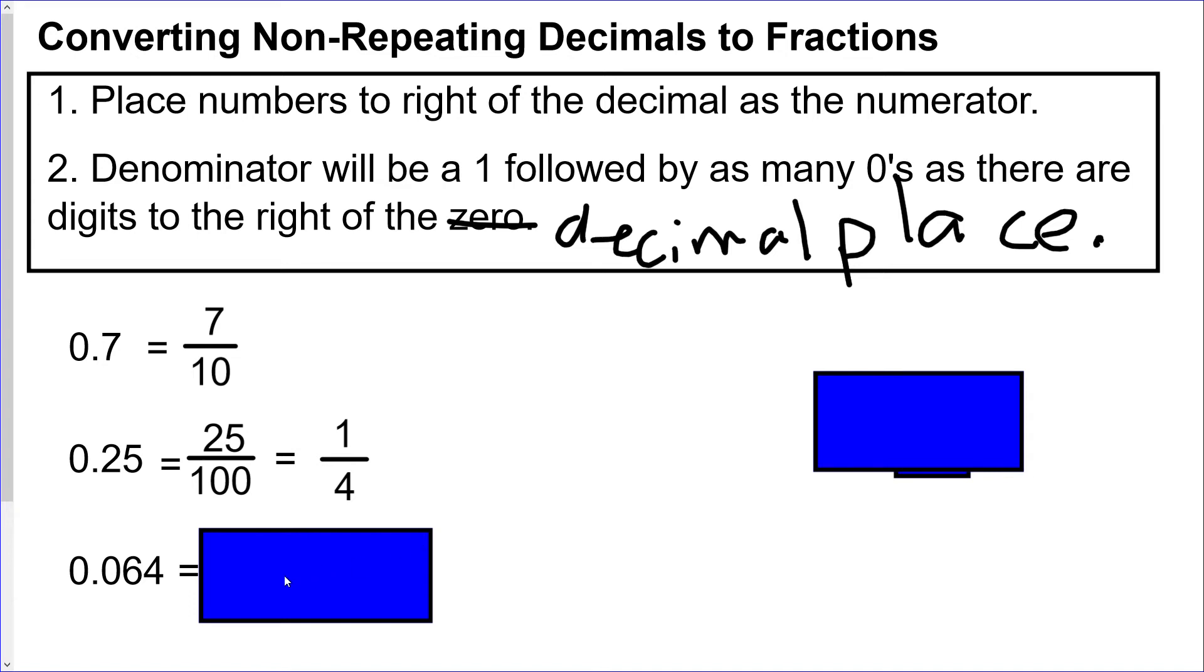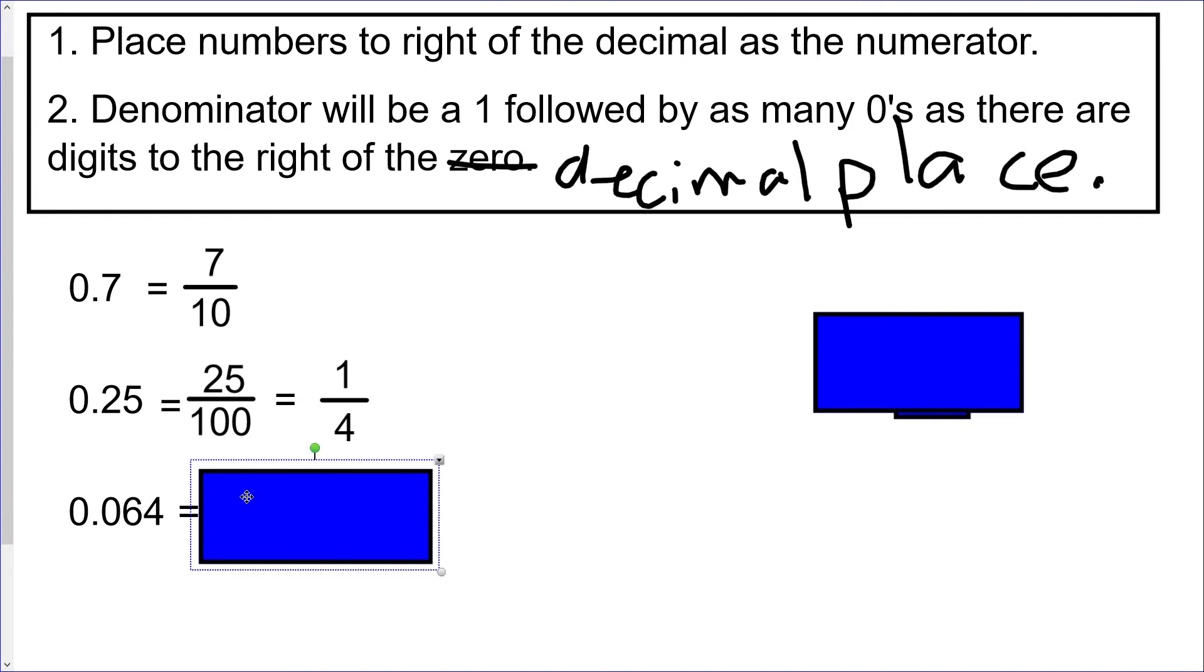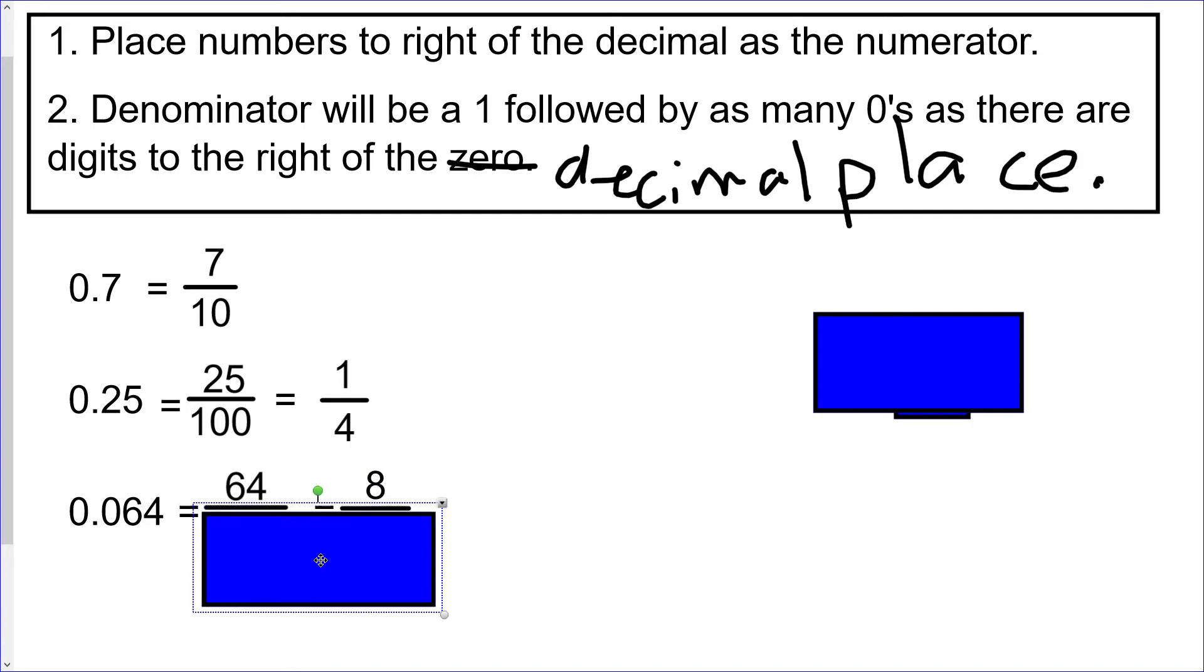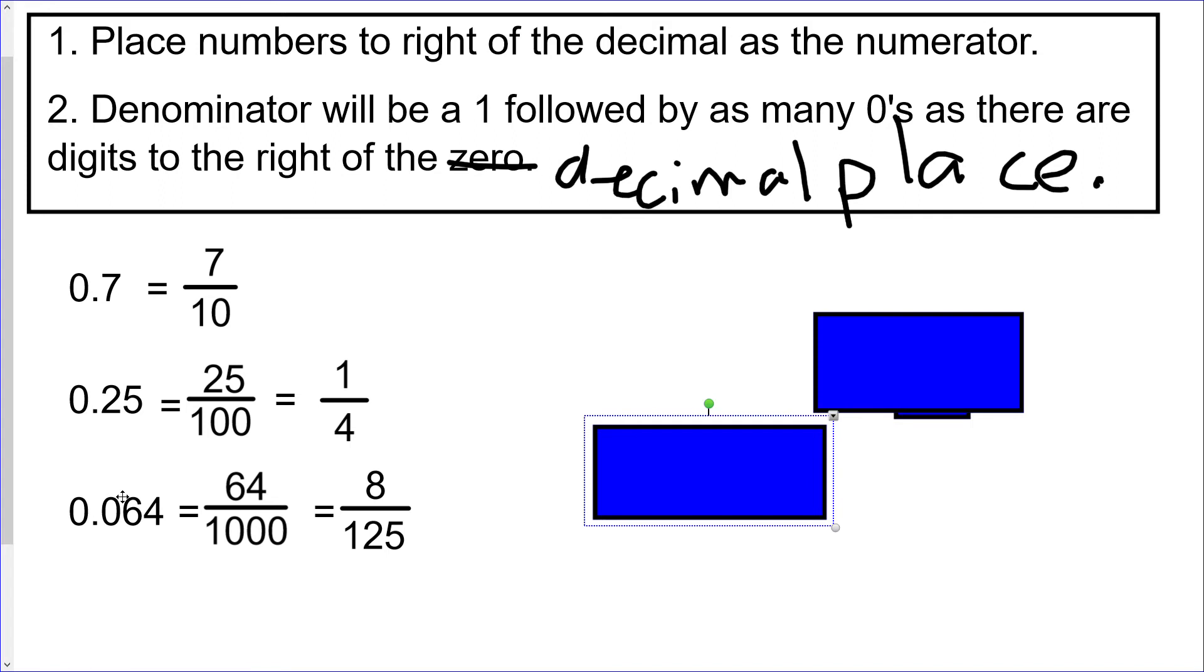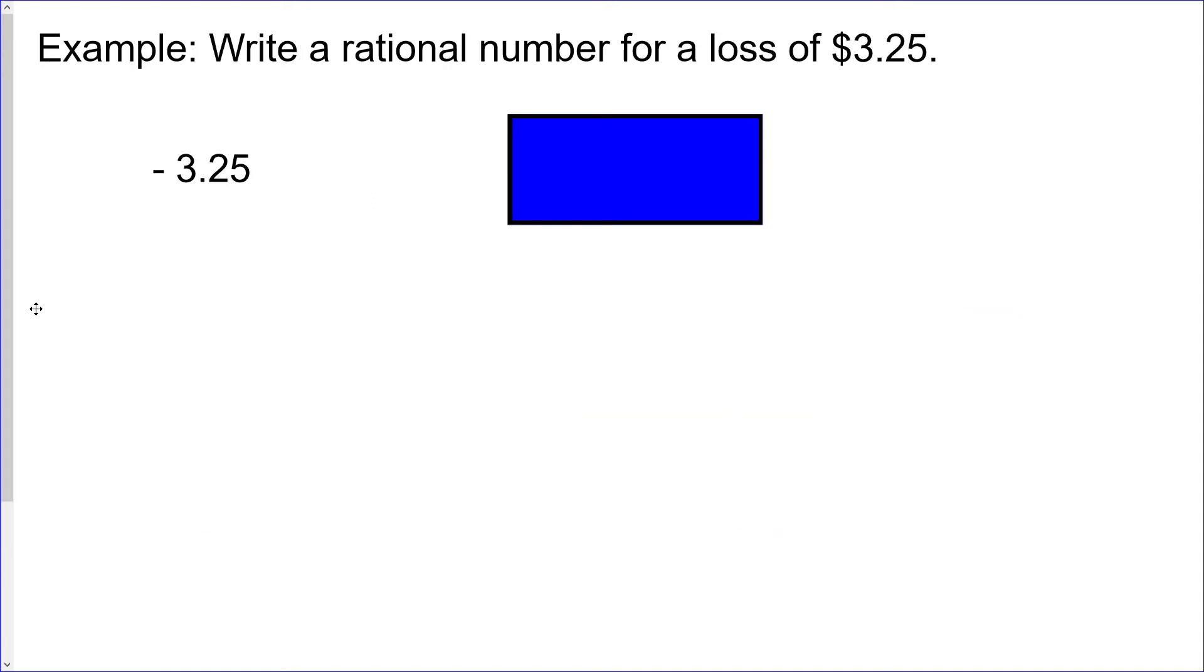And the last one down here, 0.064. Because there are three digits to the right of that decimal point, that would become the top and 1000 would be the bottom, again three digits there so three zeros. And that reduces to 8 over 125.